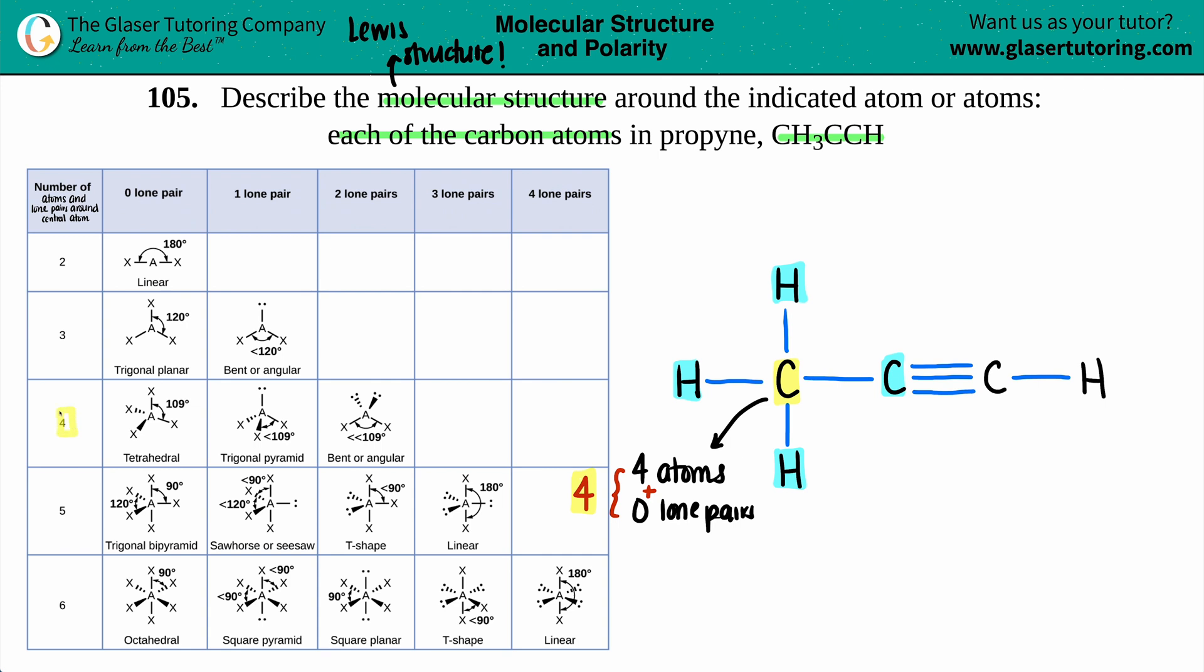So here we are. And now there's three options, tetrahedral, trigonal pyramidal, or bent. Nobody really says angular. And that all comes from the lone pairs. And we said that this carbon had zero lone pairs. So we're in this territory, and we pick where they meet. So this carbon has a tetrahedral. Tetra means four. There's four guys around it. So that's the molecular structure or the molecular geometry for that carbon.